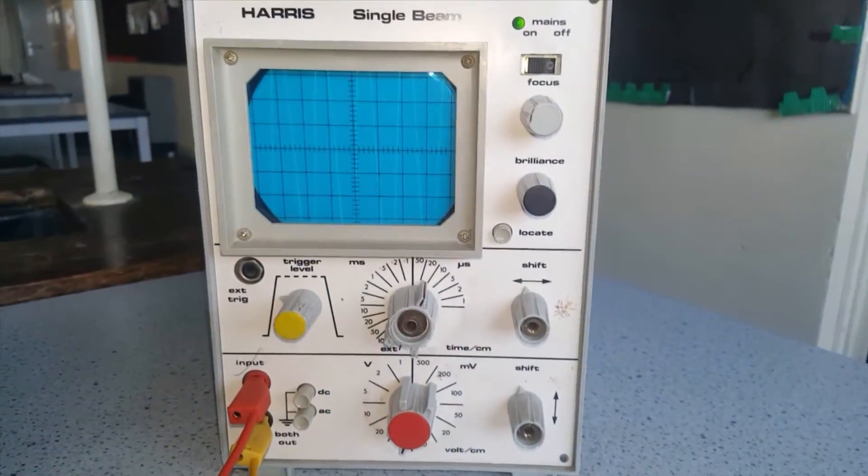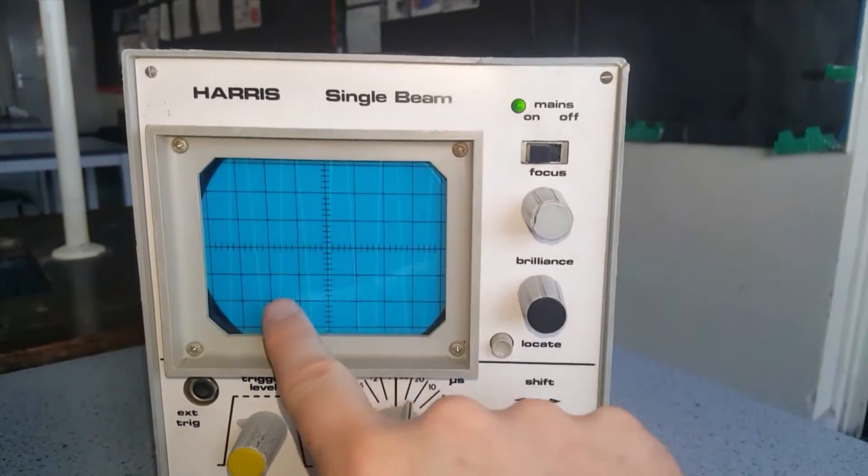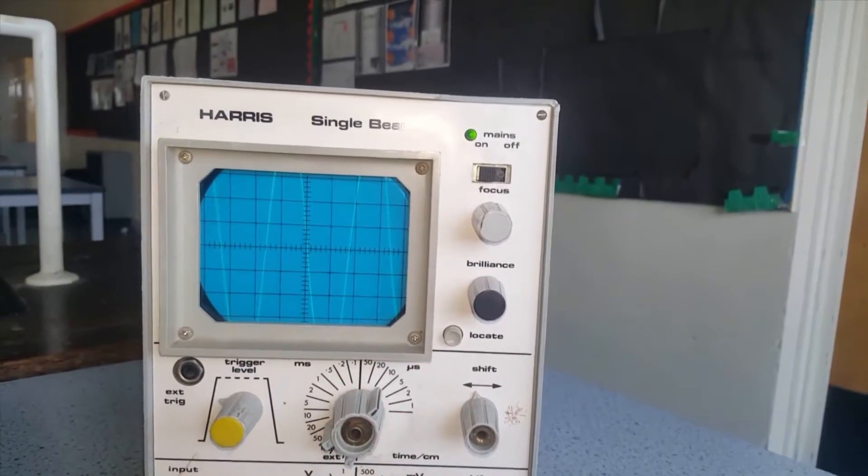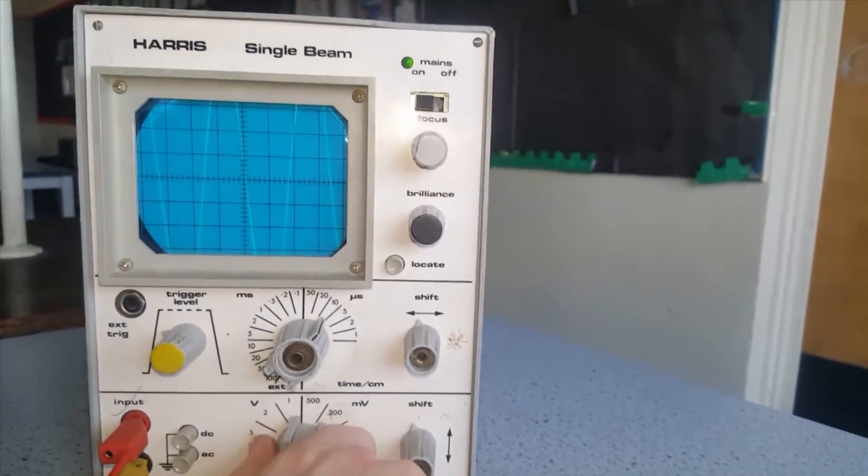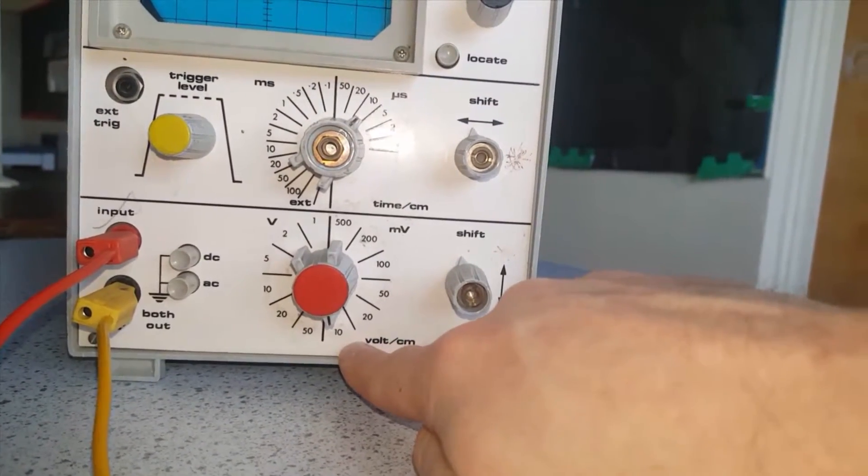When you first connect your signal generator you may be faced with a signal that looks something like this, it doesn't quite fit on the screen, so we can adjust these dials to change that. That's expanded the wave a little bit and by turning the voltage down here we can reduce that to 10.